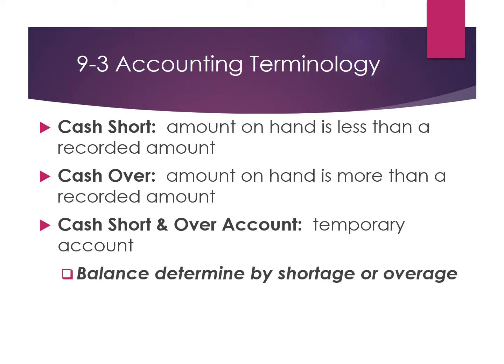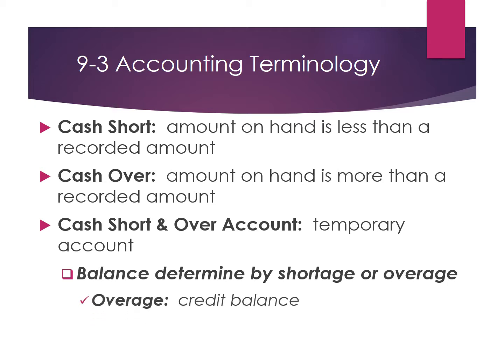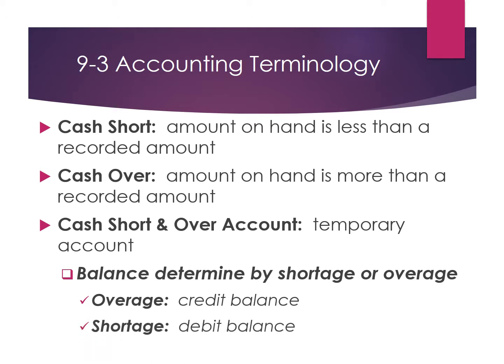The balance of the Cash Short and Over Account is determined by the shortage or overage. If you have an overage, you will have a credit balance. If you have a shortage, it will be a debit balance. It is treated like an expense.